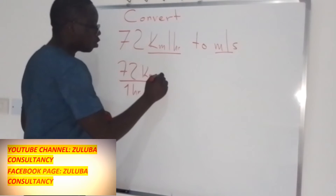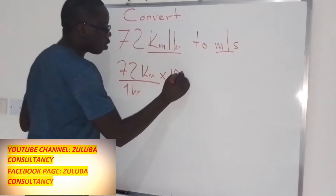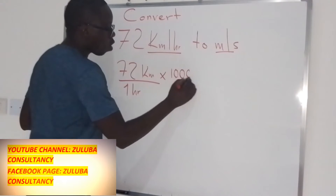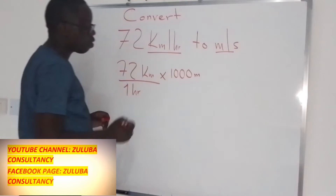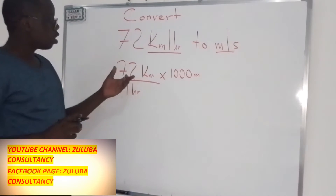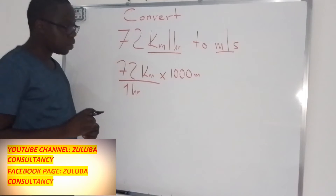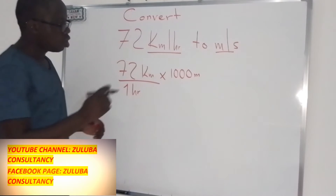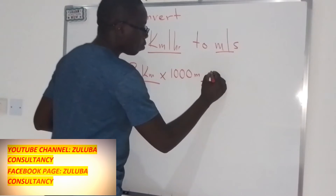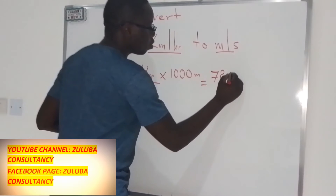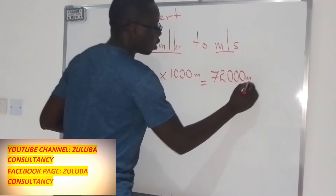To change kilometers to meters, you simply multiply by 1,000. So when you multiply by 1,000, you are changing the kilometers to meters. We'll get 72,000 meters.